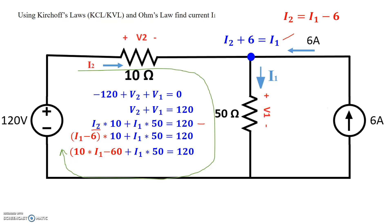I get 10I1 minus 60 plus 50I1 equals 120. And 60I1 equals 180, and simplifying that gives me I1 equals 3A. So this gives me 3A right here. So that's what we are asked to find. So we're asked to find the current I1. What is current I1?